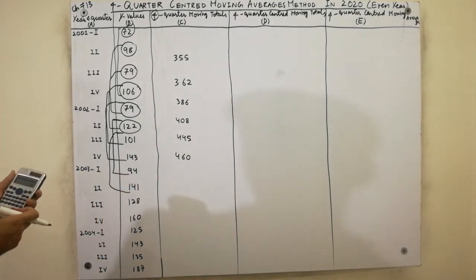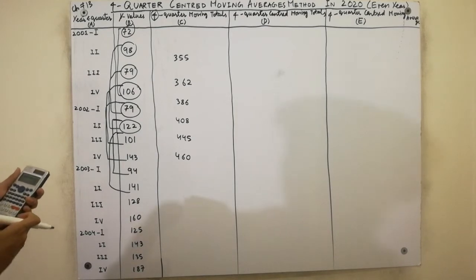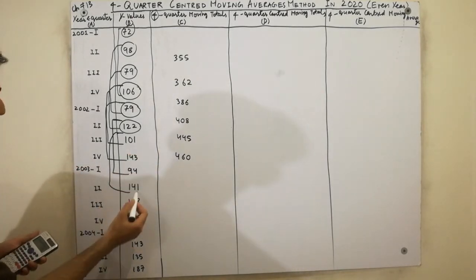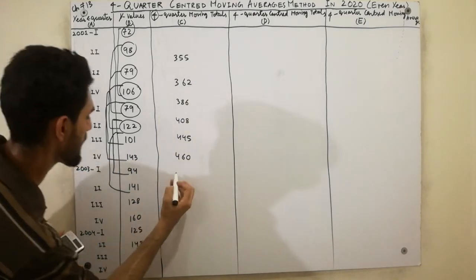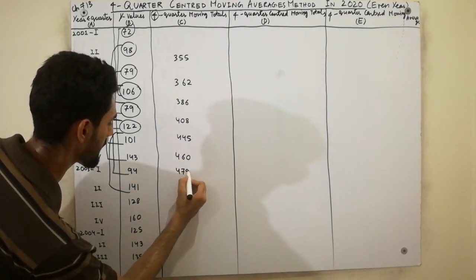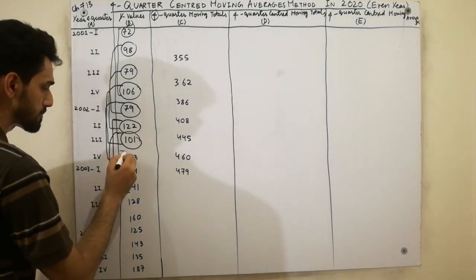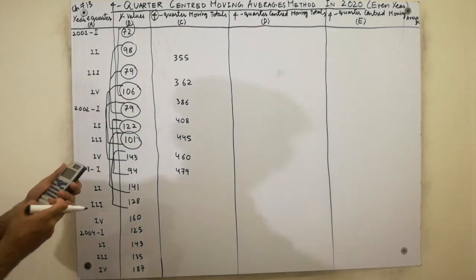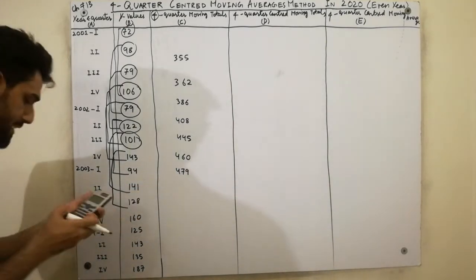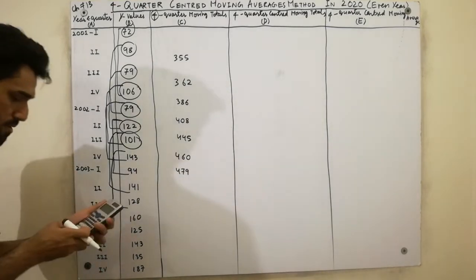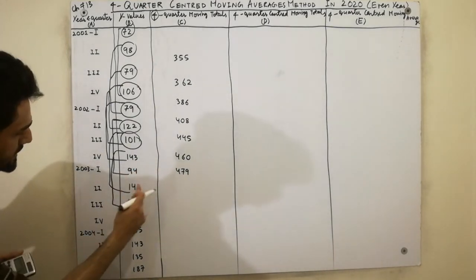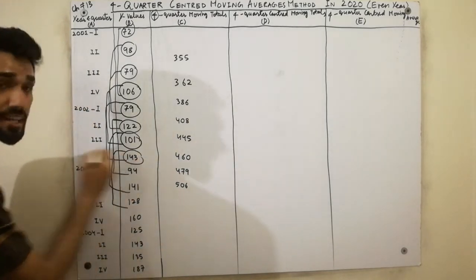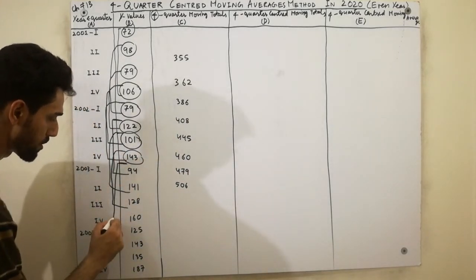We leave that value and add the next four values: 101 plus 143 plus 94 plus 141. We get the value 479, written in the center. Then the next four values: 143 plus 94 plus 141 plus 128. We get the value 506, written in the center.